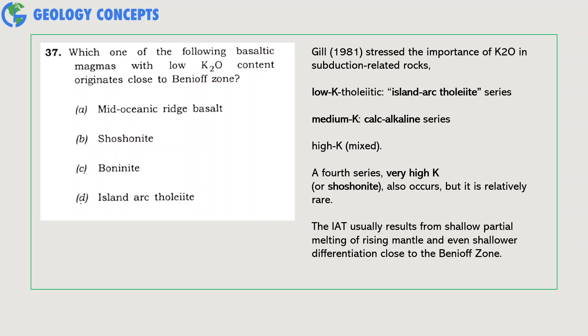Gill first stressed the importance of K2O in subduction-related rocks and divided them into low potassium tholeiites or island arc tholeiite series, medium potassium calc-alkaline series, and high potassium series which are of mixed type. A fourth series, very high potassium also called shoshonite, also occurs but is relatively rare.